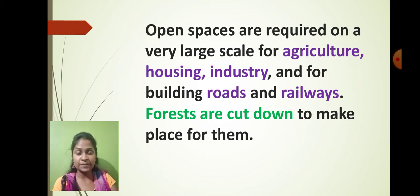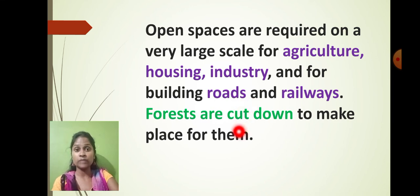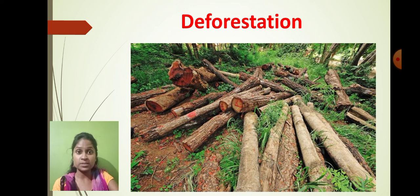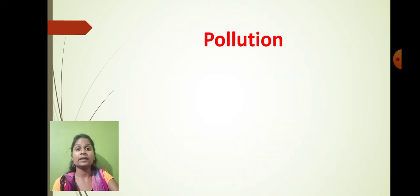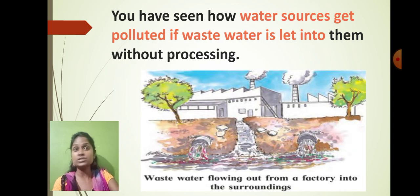Students, let us recap what we have learned today. We learned about deforestation — for the construction of agriculture, housing, industry, roads, and railways we destroy entire forests. This is called deforestation. Because of deforestation, the habitat of animals and birds is also being destroyed, and the entire ecosystem gets disturbed.